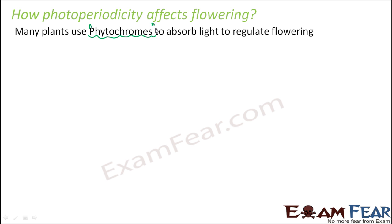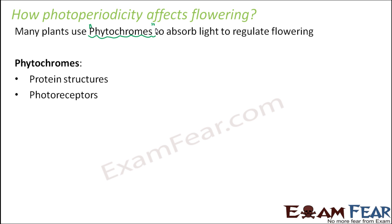The job of phytochromes is to absorb light and regulate flowering — they are responsible for absorbing light. If you look at their structures, they are complex protein structures, and proteins exist in so many forms. These phytochrome structures exist in two forms, and they are the photoreceptors — that is, light receptors. The two forms are Pr and Pfr.